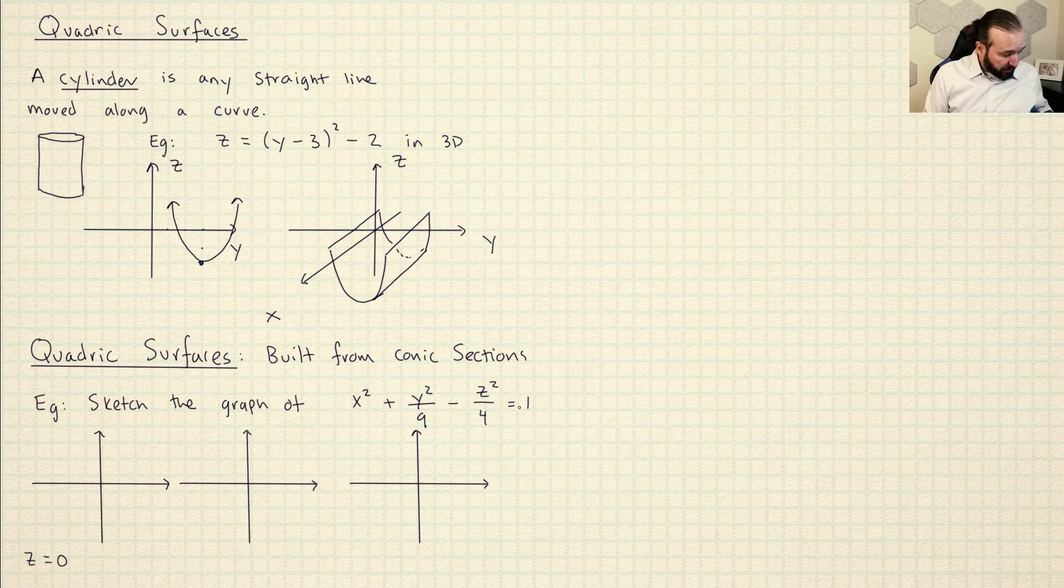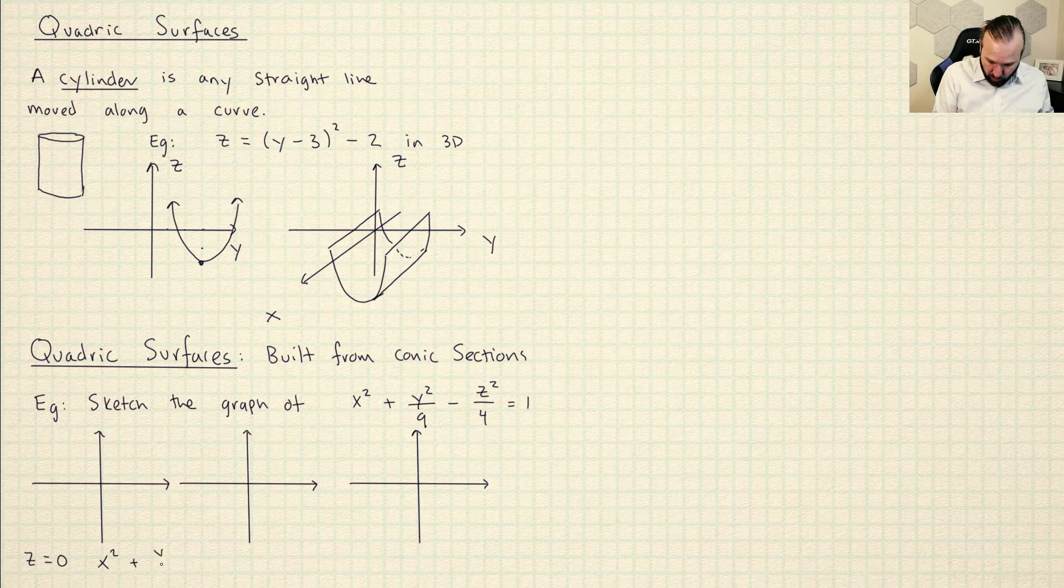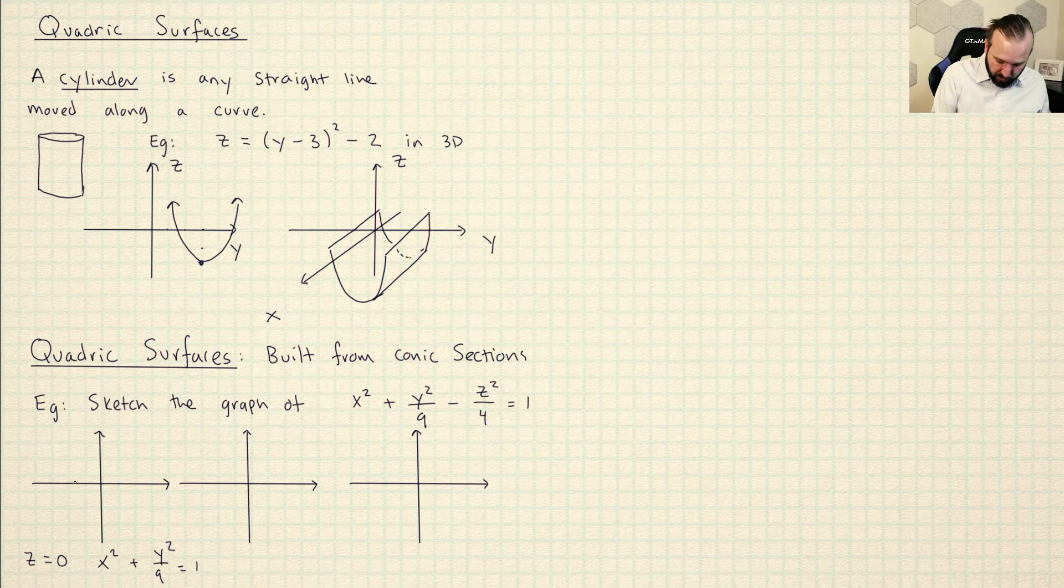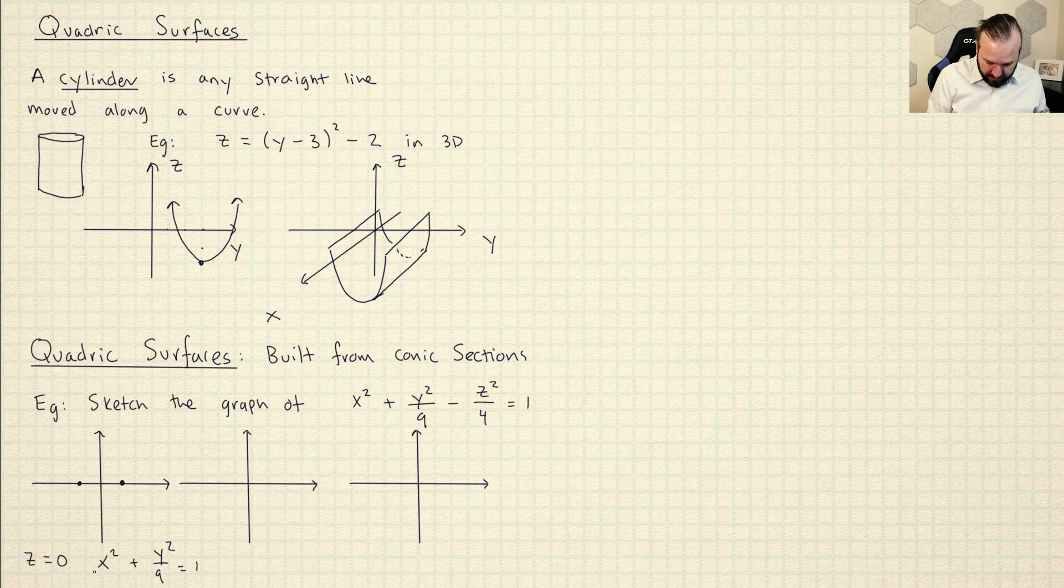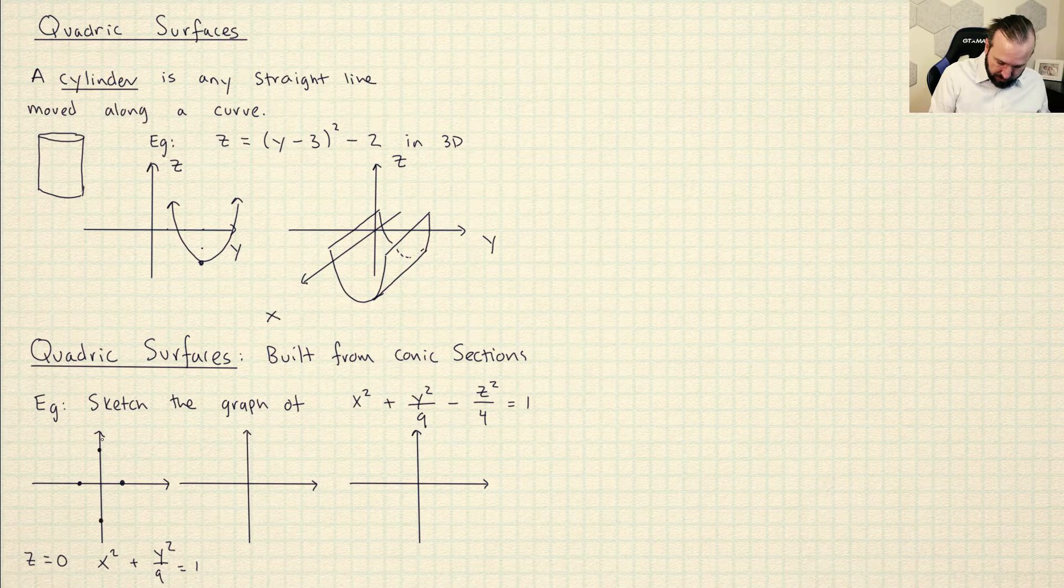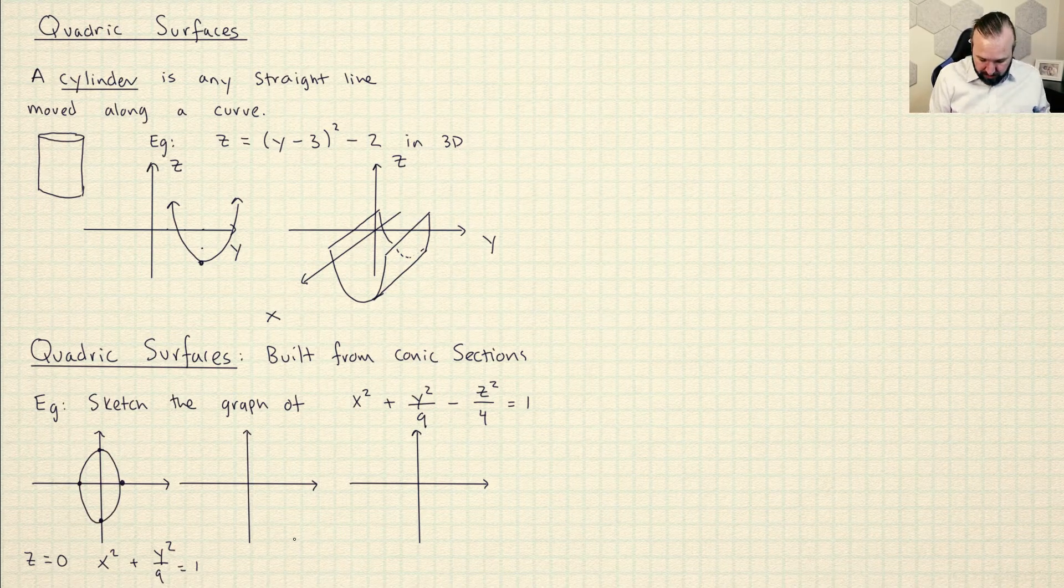So if Z is equal to 0, so I'm literally just plugging Z equals 0 into this equation right here. And what I get is X squared plus Y squared over 9 equals 1. So this is an ellipse. You can see if the Y was 0, I would get X as plus or minus 1. So I'll do X as like plus or minus 1 right there. And then if the X was 0, I would get Y as plus or minus 3. So I get a kind of ellipse that's been stretched out in this way. It's not a bad drawing there.